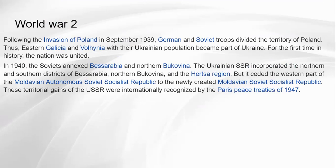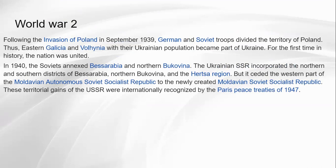Regarding WW2: following the invasion of Poland in September 1939, German and Soviet troops divided Polish territory, and eastern Galicia and Volhynia with their Ukrainian population became part of Ukraine for the first time in history. In 1940, the Soviets annexed Bessarabia and northern Bukovina. The Ukrainian SSR incorporated the north and south districts of Bessarabia, northern Bukovina, and the Hertsa region, while the western part of the Moldavian ASSR became the newly created Moldovan SSR. These territorial gains were internationally recognized by the Paris Peace Treaty of 1947.